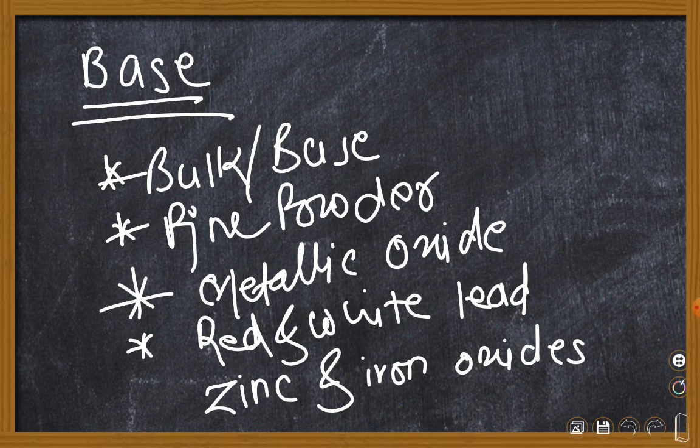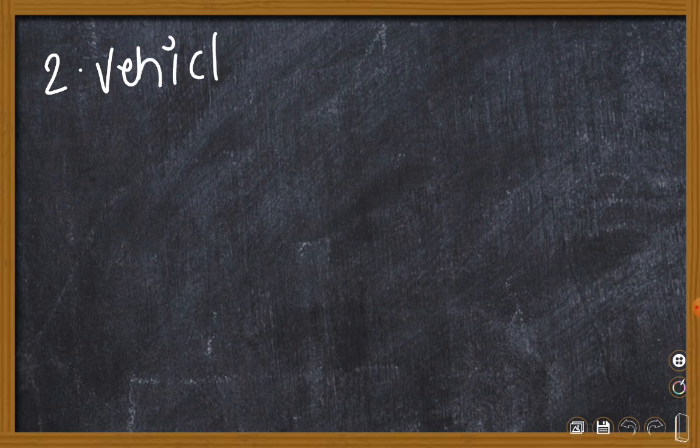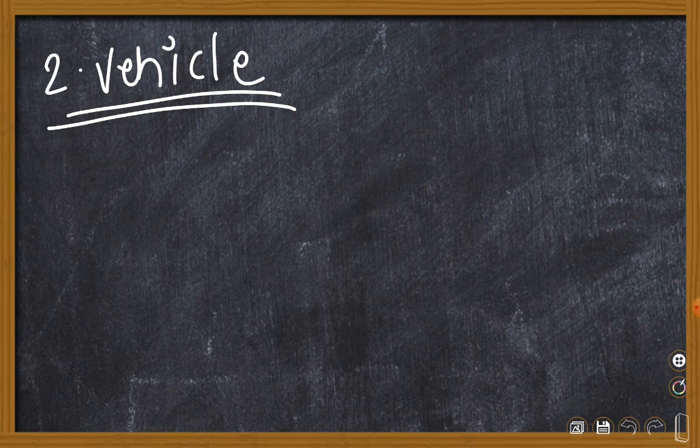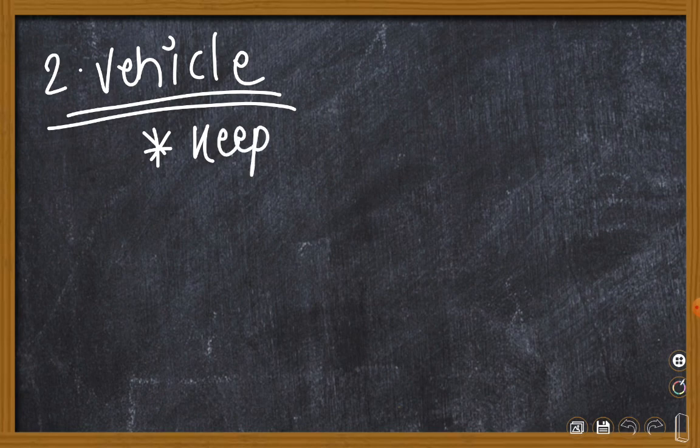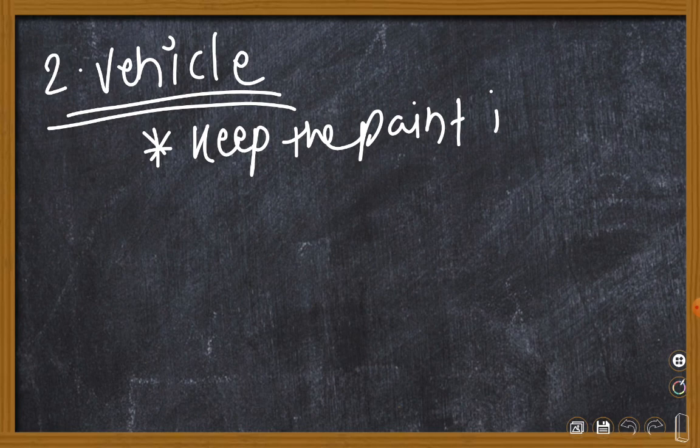Let's proceed to the second component, the second constituent, which is vehicle. The keyword vehicle is synonymous with what it functions in the paint. The main function of the vehicle is to keep the paint in suspension.